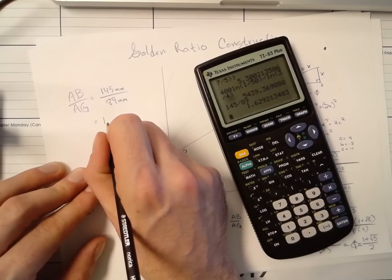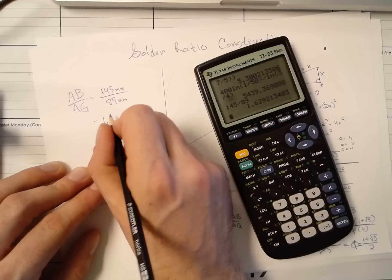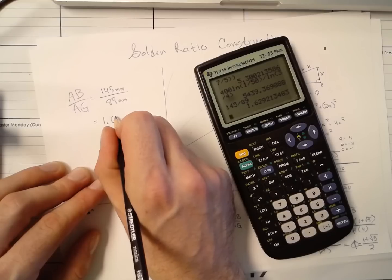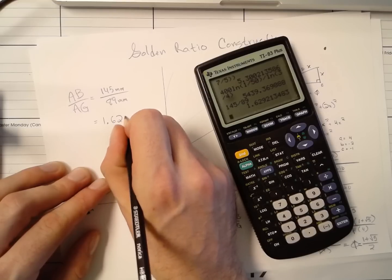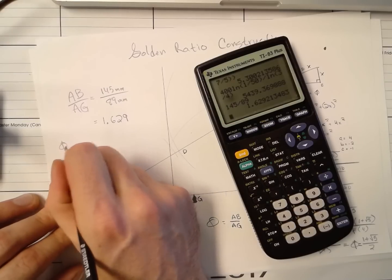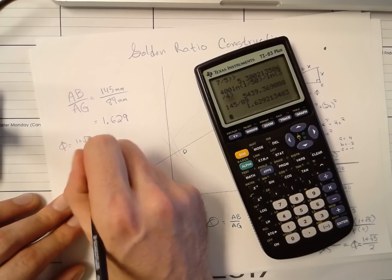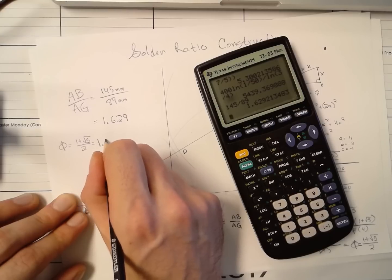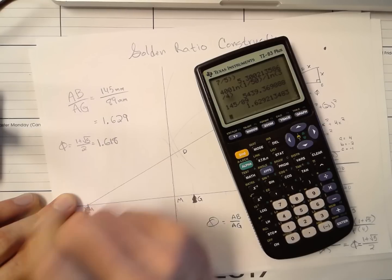All right. That's not as good as I'd hoped, but we will see if it is acceptable in just one quick second. So, to three decimal places of accuracy, that is 1.629. Now, phi, 1 plus root 5 over 2, if you remember, is approximately equal to three decimal places of accuracy, 1.618.